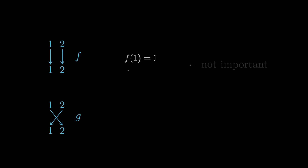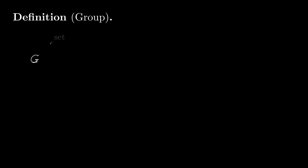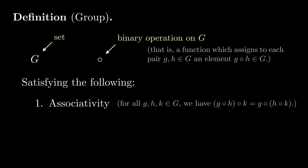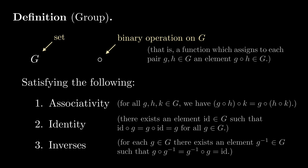Permutation groups are a concrete example of a more abstract mathematical object known as a group. The idea is that we don't want to pay attention to how exactly each bijection shuffles the elements of x — instead, all we care about is what happens when we compose them. A group is a set g equipped with a binary operation, which we'll call composition for now, satisfying the following properties. First, composition must be associative. Second, there must be an identity element, which we define to be an element for which composing with it does nothing. Third, every element g in G must have an inverse, which we define to be an element which when composed with g becomes the identity.